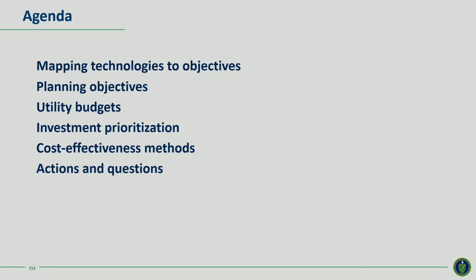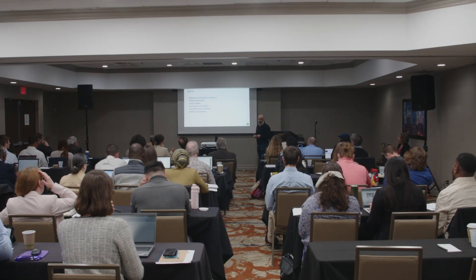In particular, I want to think about three pieces: objectives — how we connect the dots between functionality of given technologies and system objectives; planning objectives themselves and how we link those to planning criteria; utility budgets — what they look like and their anatomy; and investment prioritization — how we prioritize among those objectives. We're also going to get into the details of cost-effectiveness, methods, and drivers. I'll leave you with some actions and questions as a takeaway.